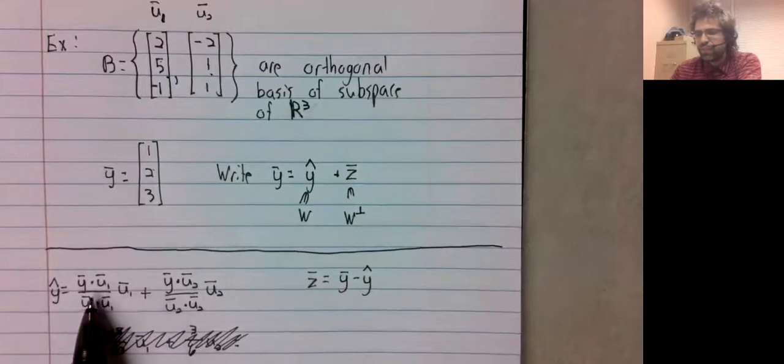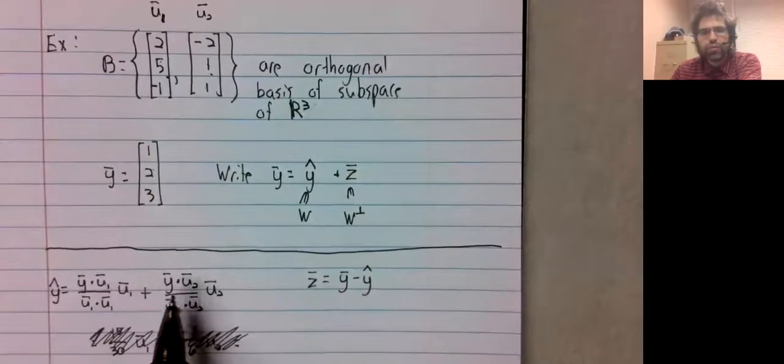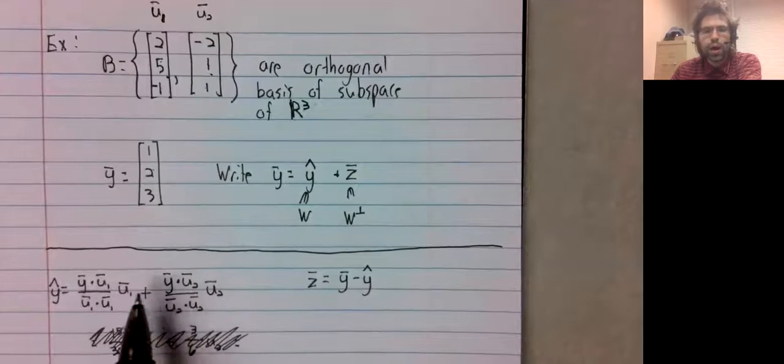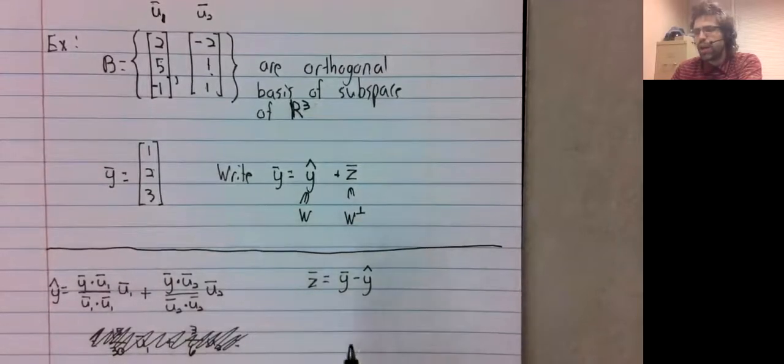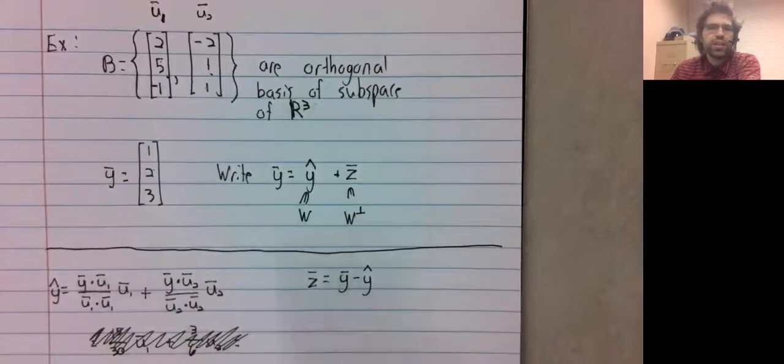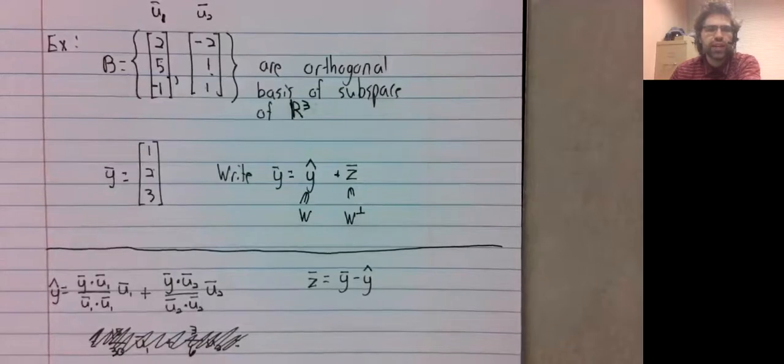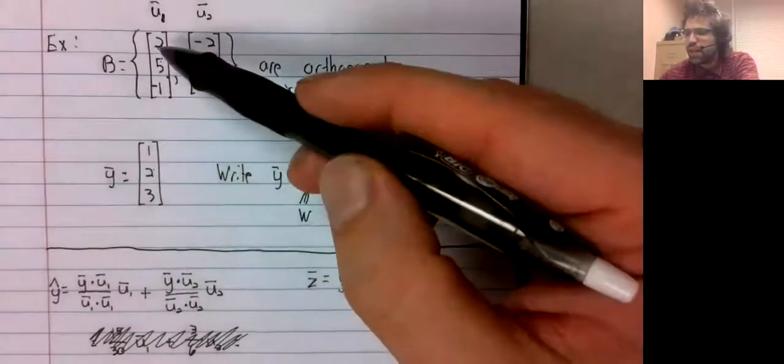Well, here's the formula for y hat. Once we find y hat, finding z is simply done via subtraction. And this is pretty plug and play.